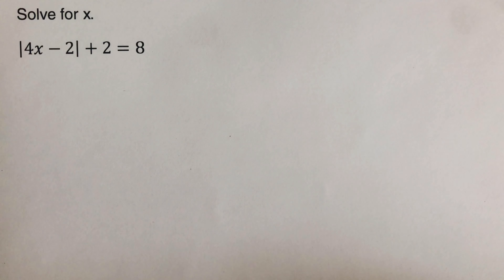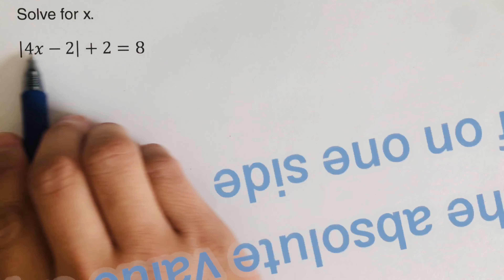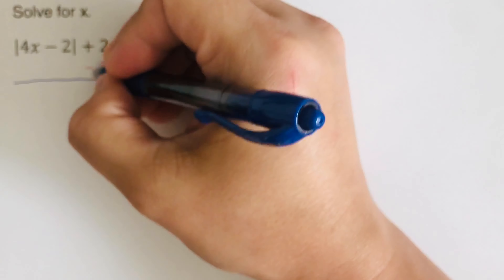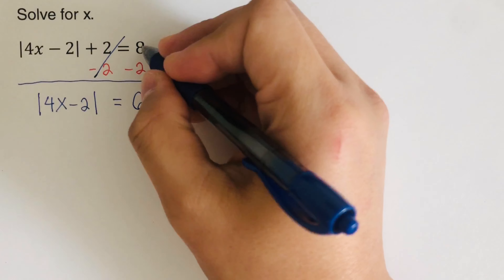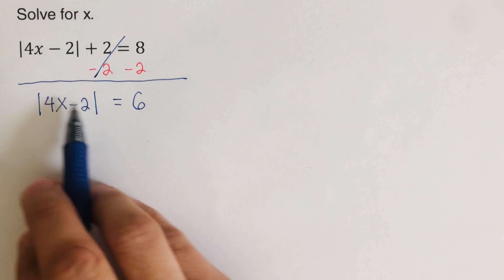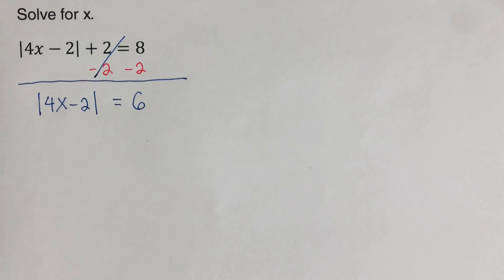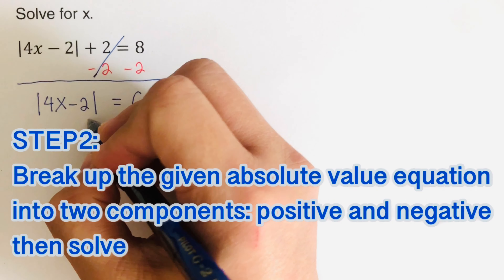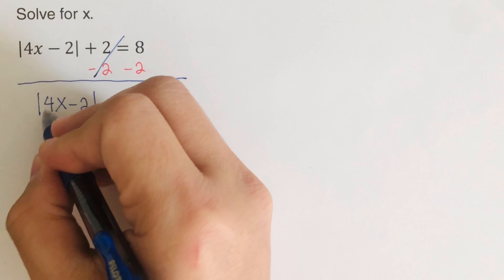Let's go over the next example. Step one: isolate the absolute value expression by itself. We have a +2 next to it, so subtract 2 from both sides. This gives us |4x - 2| = 8 - 2 = 6. We've completed step one — the absolute value expression is now isolated.